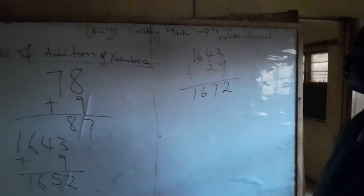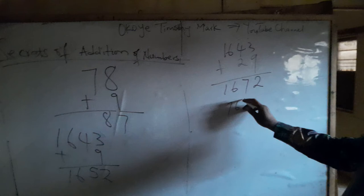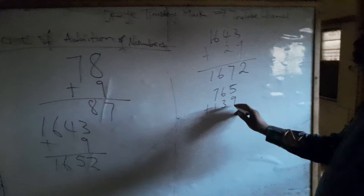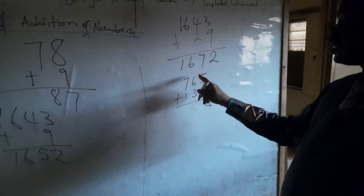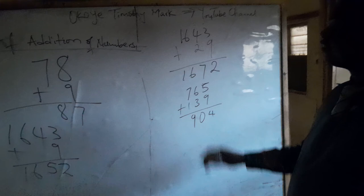If I have 765 plus 139, no problem. I decrease the 5 by 1 — this becomes 4. I increase 1 by 1 — this turns out to be 7. Then 7 plus 3 plus 3 is 10, so you write 0 and shift 1. 7 plus 1 is 8, plus that 1 — this is now 9. The answer is 904. Why do you need a calculator?